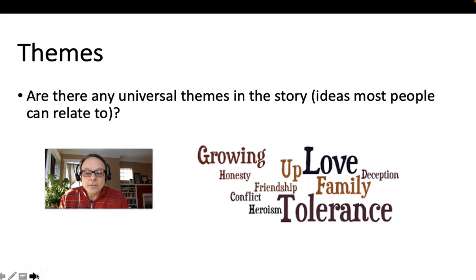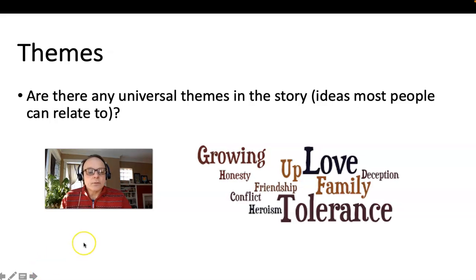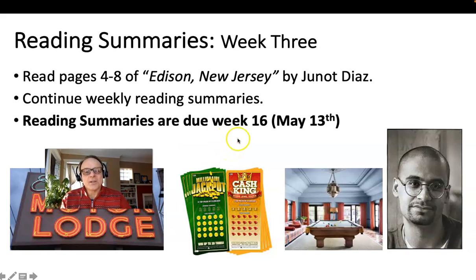Some of the themes — I asked you to read about economic inequality. You may see there's a comparison between the workers going out and doing the work and taking these pool tables to very well-off, privileged people. That's a contrast that's coming up and maybe a theme. There are also themes about work and honesty — all kinds of things that can come up in any story, and I think you'll see some of those here too. For the reading summaries, remember those are not due until May 13th. But for this week, if you can read pages four to eight for your reading summary. There should be questions in the week four course content folder in Blackboard.